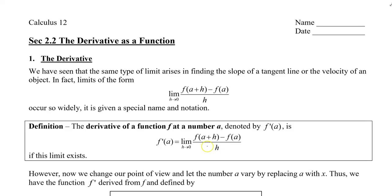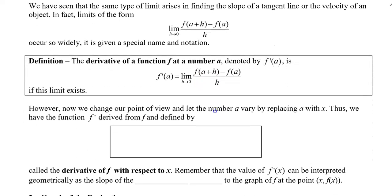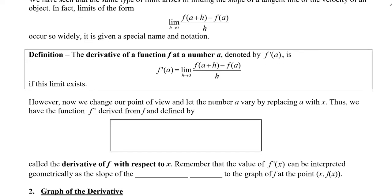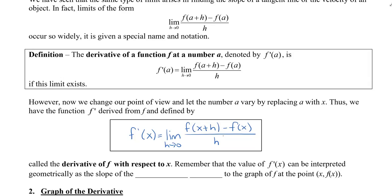When we ask you to find the derivative using the definition, you're going to use this form. However, we're going to change our point of view slightly. Instead of using a so that we have a number, we're going to replace the a with x. Thus, we have the function f prime derived from f, and it's defined as f prime of x equals the limit as h approaches 0 of f of x plus h minus f of x all divided by h. It's basically the same thing, but instead of plugging a number in, we're using the variable x.